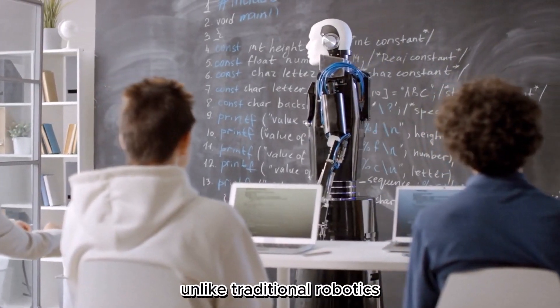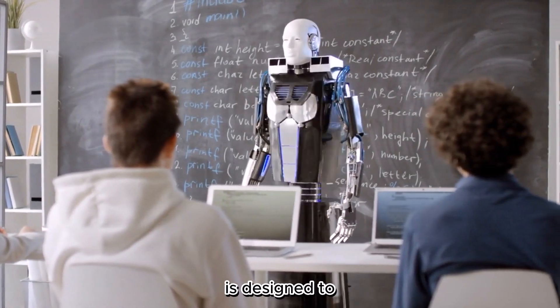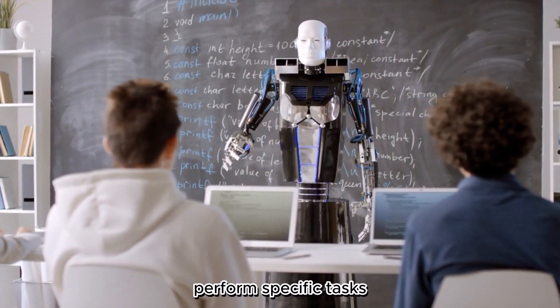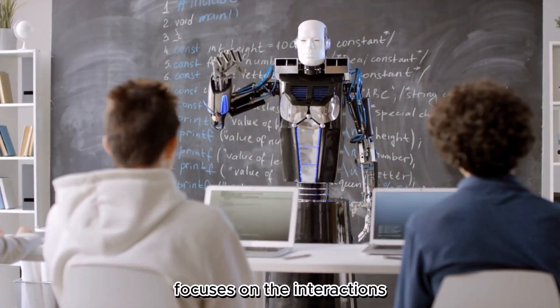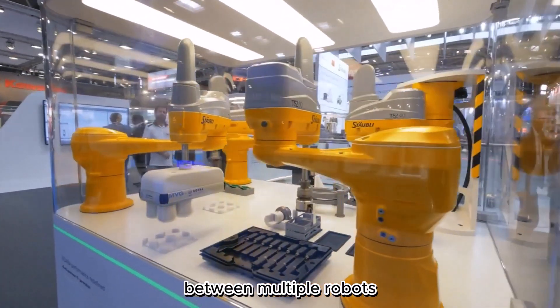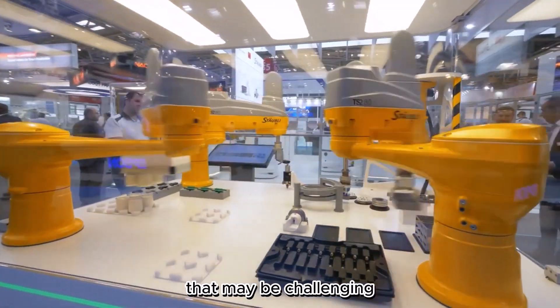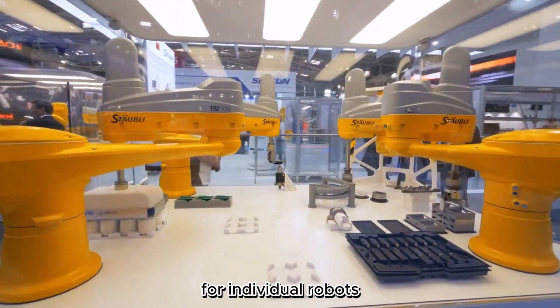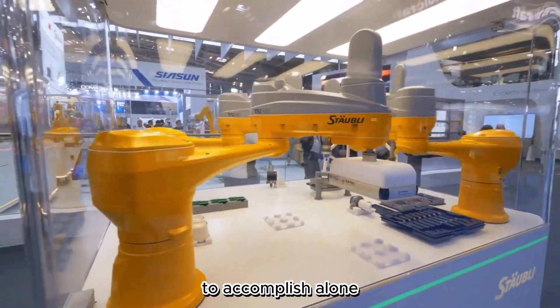Unlike traditional robotics, where a single complex robot is designed to perform specific tasks, swarm robotics focuses on the interactions and collaboration between multiple robots to achieve tasks that may be challenging or impossible for individual robots to accomplish alone. Number 1.